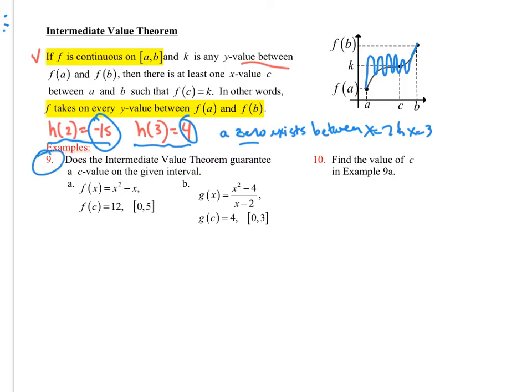So let's look at number 9 now. Does the Intermediate Value Theorem guarantee a c value on the given interval? Well, look at this. First of all, this is a continuous function. If we have any polynomial, it's going to be continuous. This is a polynomial, quadratic. And so when we look at this, f(c) is equal to 12 on this interval. So we have to check the endpoints and see if 12 falls in between my two y values.